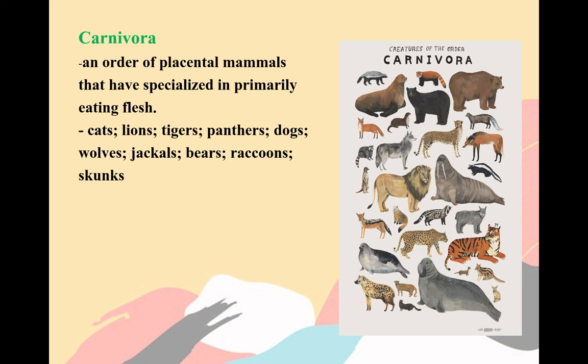The next type of family order is Carnivora — an order of placental mammals that have specialized in primarily eating flesh. Examples are cats, lions, tigers, panthers, dogs, wolves, jackals, bears, raccoons, skunks, and many more.